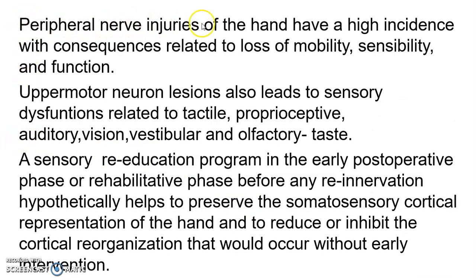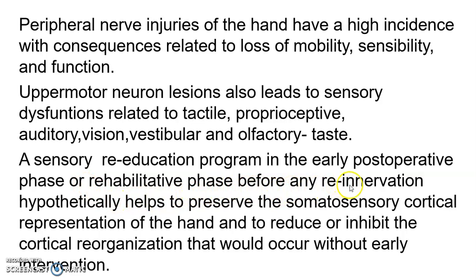Peripheral nerve injuries of the hand have high incidence with consequences related to loss of mobility, sensation, and function. Upper motor brain lesions also lead to sensory dysfunctions including tactile dysfunction, proprioceptive dysfunction, auditory dysfunction, visual dysfunction, vestibular dysfunction, olfactory dysfunction, and gustatory — that is taste — dysfunction. A sensory re-education program in the early post-operative or rehabilitative phase helps to preserve the somatosensory cortical representation of the hand and reduce cortical reorganization that would occur without early intervention.